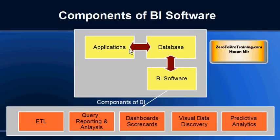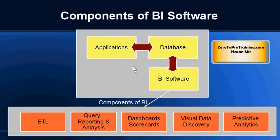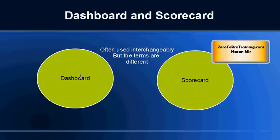Business Objects is business intelligence software from SAP. A typical business intelligence software will provide us components like ETL, querying, reporting, analysis, and also dashboards and scorecard tools. The term dashboard and scorecard is usually used synonymously, however there are slight differences in the meanings of the two terms.